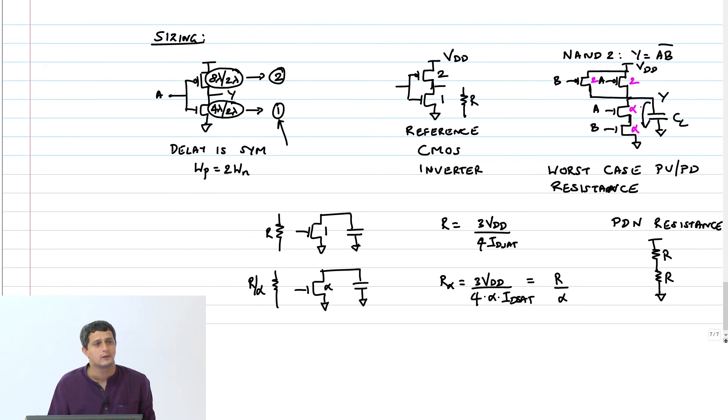By design I want to make sure that the worst case pull-down resistance on that pull-down network is exactly equal to the pull-down resistance of my reference CMOS inverter. Therefore I have to make this 1 as some alpha, and we will calculate what alpha is. I am going to make it alpha, alpha. And the net resistance is now going to be R by alpha, R by alpha. This will be 2R by alpha. But by design I want this to be R. Therefore alpha has to be 2.